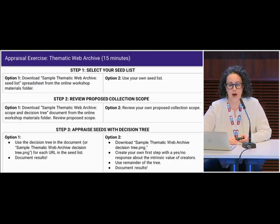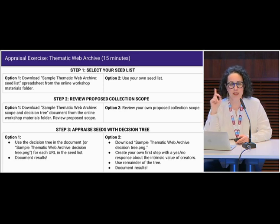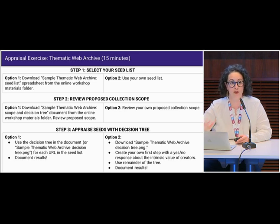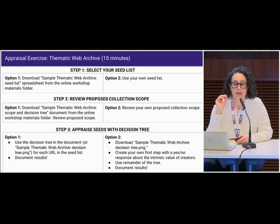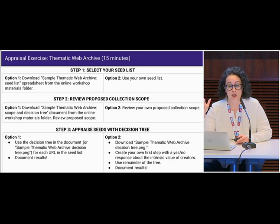Here's our appraisal exercise for the thematic web archive — we're going to spend about 15 minutes. This is choose your own adventure. Option one: use the materials in the Google Drive folder. Option two: use materials from your own institution. Step one: select your seed list — either the sample thematic web archive seed list from Google Drive or the one you brought. Step two: review the proposed collection scope. If you're using the sample from Google Drive, there's a document that says 'scope and decision tree' — review that proposed scope. Option two: review the proposed collection scope of the seed list you brought.